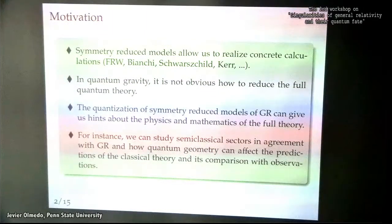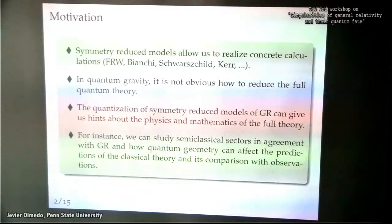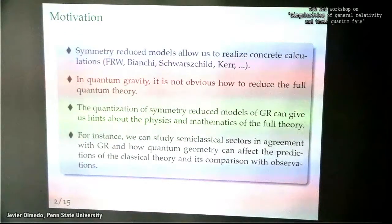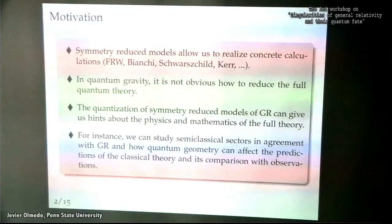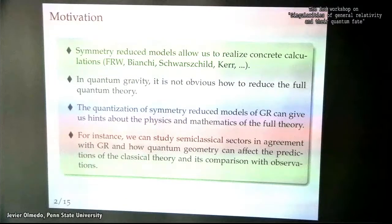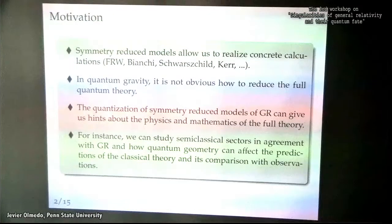Within this theory, it is not obvious how to extract predictions. Given an initial state, we should be able to do evolution, but at the moment we don't know how to do that. One possibility proposed recently is extracting simpler models from the full theory — work done by Emanuel Aleski, Andrea Dapor, or Daniel Oriti. Here I will focus on the quantization of symmetry-reduced models. Our experience is that we can learn many interesting things from these models that can be applied to the full theory, not only physical ones but also mathematical.